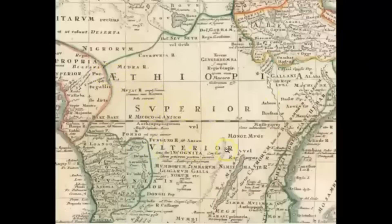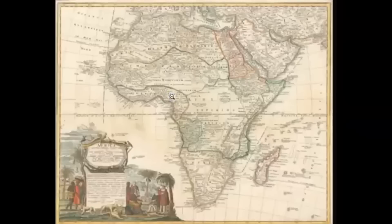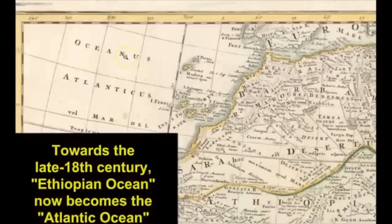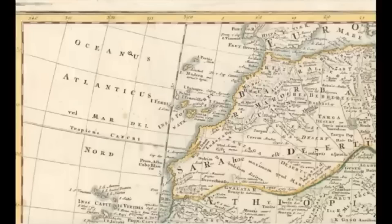What's very interesting is that seven years later, all of a sudden the ocean is no longer known as the Ethiopian Ocean or the Ethiopian Sea — now it's changed to the Atlantic Ocean, as you can see right here. About the time of the mid-1700s is when they started changing things and trying to hide and conceal scriptural evidence and scriptural maps, and started changing the names as they did right here.